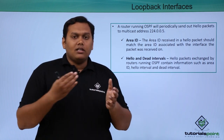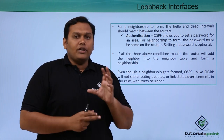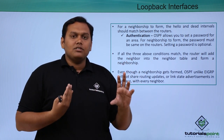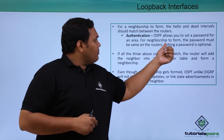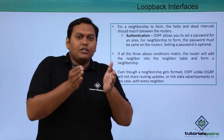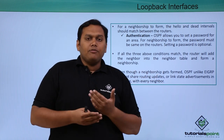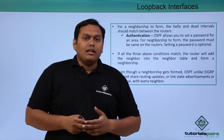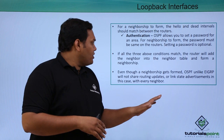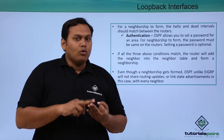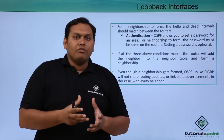Hello and dead intervals are very useful for forming neighborships. When a hello interval acknowledgement is received, the neighbor is established and connectivity is confirmed. OSPF allows you to set a password for the area, and authentication is required for neighborships to form — hello packets are sent to neighbors with this authentication. Unlike EIGRP, OSPF does not share routing updates or link state details in the same way; instead, OSPF maintains information in three tables: the neighborships table, topology table, and routing table, which together improve OSPF functioning.